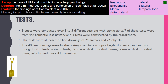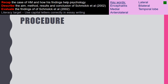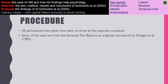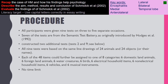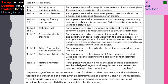Schmollock used nine tests conducted over three to five different sessions. Seven of these tests were from the semantic test battery and two were constructed by the researchers. All tests were based on line drawings of 24 animals and 24 objects, and these 48 line drawings were further categorised into eight groups. There is no time limit for participants to complete the tests. An outline of the different tests is shown on screen, and while you don't need to specify every one, you should have an overall knowledge of the tests used.